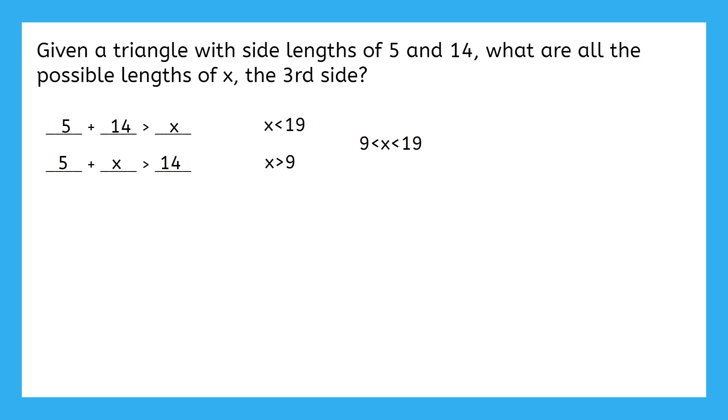But there is a shortcut we can use to get this answer. Do you notice the relationship between these side lengths and the numbers we got here? Adding 5 and 14 gives us 19, and subtracting the smaller side 5 from the larger side 14 gives us 9. That's the shortcut.